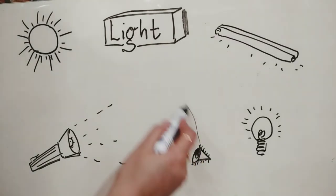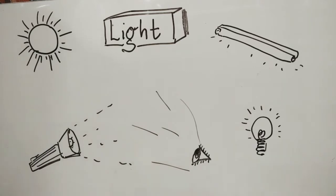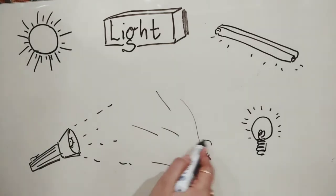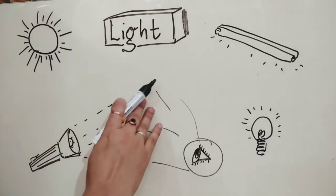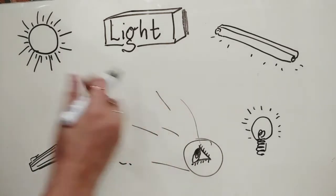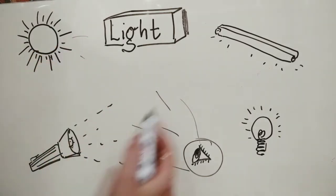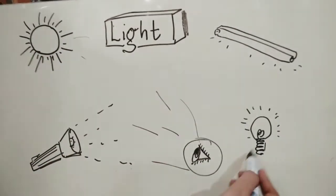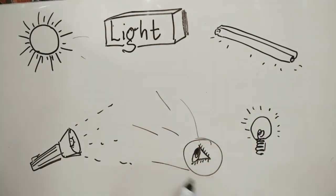We see a variety of objects in the world around us. We are able to see because of our eyes. We are unable to see anything in a dark room. During daytime, we are able to see because of sunlight. At night, we use various electrical devices which produce artificial light, due to which we are able to see.